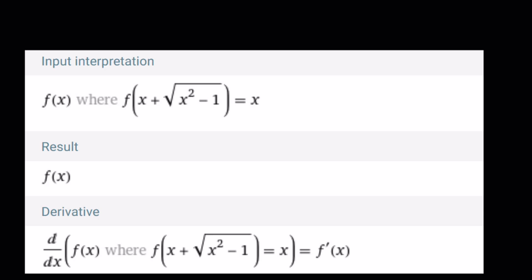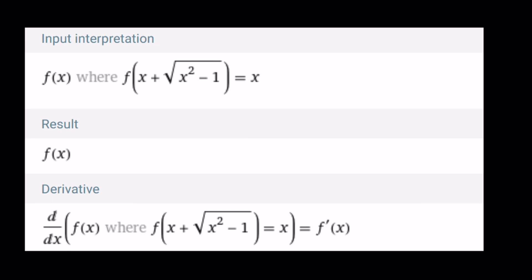But I try to ask WolframAlpha if it can find f of x where f of x plus the square root of x squared minus 1 is given as x. And it just gave me the result as f of x, which is kind of meaningless because we need to know what's on the right hand side.